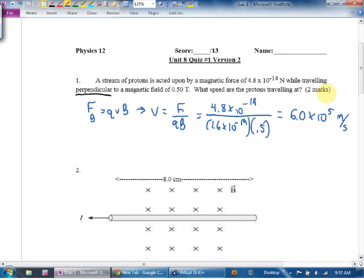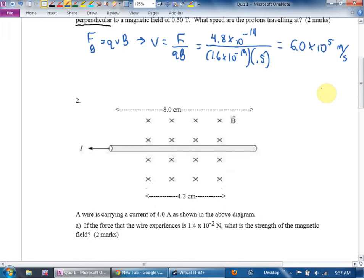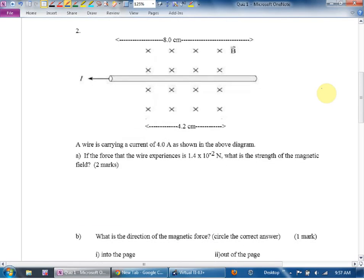Number two: a wire carrying a current of four amps is shown in the above diagram. If the force that the wire experiences is 1.4 times 10 to negative 2 newtons, what's the strength of the magnetic field? So the magnetic force in a wire is BIL. And they want me to find the strength of the magnetic field, they want me to find B, which is going to be F divided by IL. It's going to be 1.4 times 10 to the negative 2 divided by I times L, four amps.